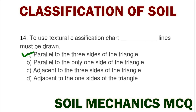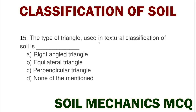Next question: the type of triangle used for textural classification is option A right angle triangle, option B equilateral triangle, option C perpendicular triangle, option D none of mentioned. The correct answer is equilateral triangle.